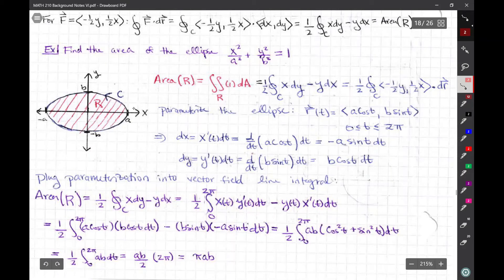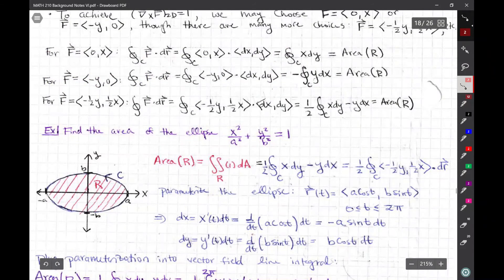The ellipse with this semi-major axis or one axis having being of length 2a and the other being of length 2b. Now, if you want to use a double integral to do this, it's actually quite complicated and not that simple. Let's instead trade this double integral for a line integral around the curve c. What vector field do we choose?